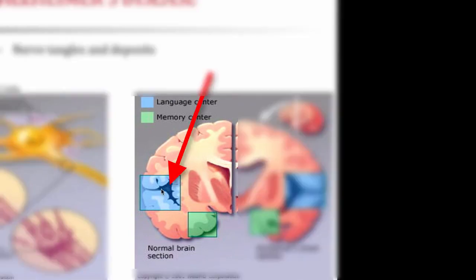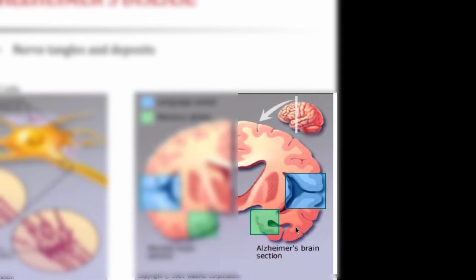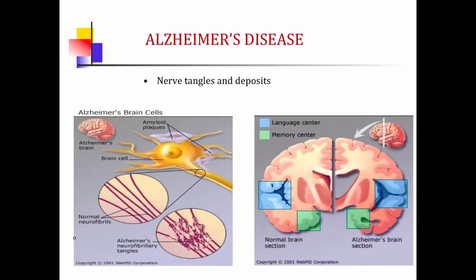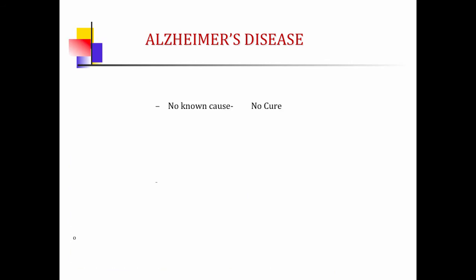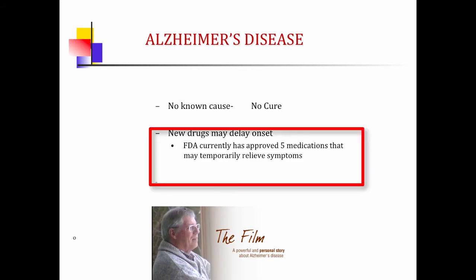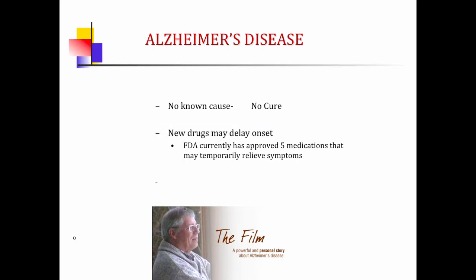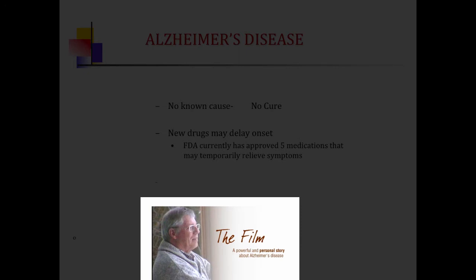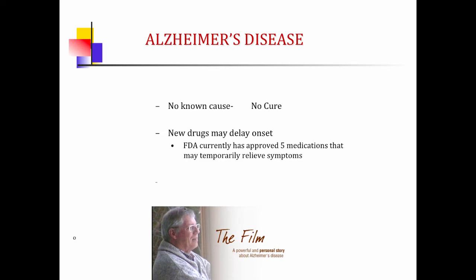On the left is a normal brain — this area controls language, this segment controls memory. In an Alzheimer's brain, due to nerve fiber damage, there is a profound difference in the language and memory centers. There's no known cause and currently no cure, but the FDA has approved five medications that may delay onset and temporarily relieve symptoms. In class, we'll look at a powerful personal story of a man who chronicles his father's progression and eventual death from Alzheimer's.